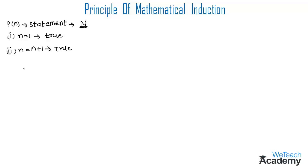Let me explain this concept with an example. First, let's prove 1 + 3 + 5 + ... + (2n - 1) = n².